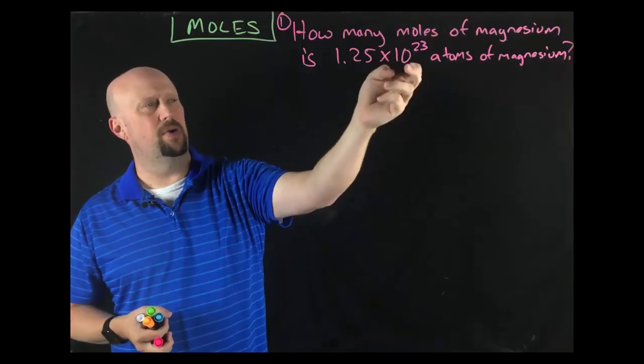Okay, so let's work our first problem. How many moles of magnesium is 1.25 times 10 to the 23rd atoms of magnesium? In other words, how many moles can we get out of this many atoms? And you're like, that is a ridiculously large number of atoms. It is, but knowing what you already know about Avogadro's number, that's not even a full mole's worth of them. And so it takes a lot of atoms to give us a mole of that specific thing.